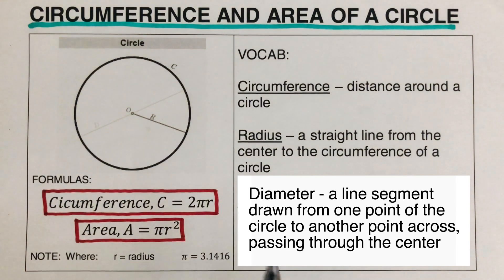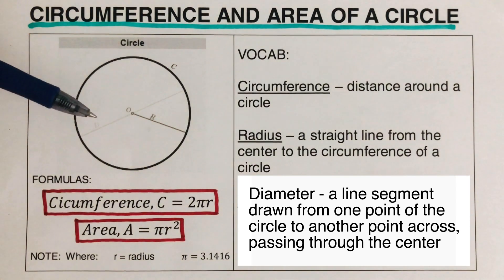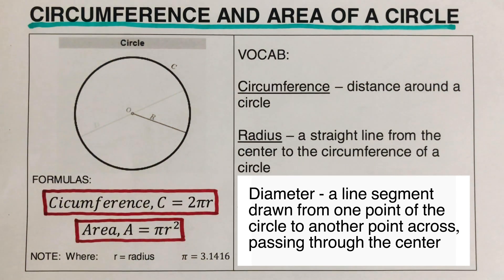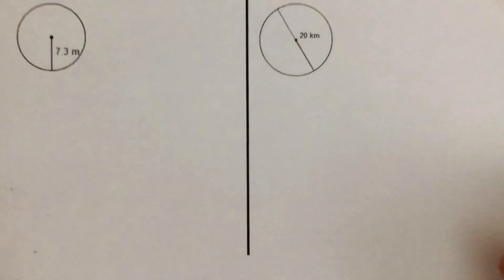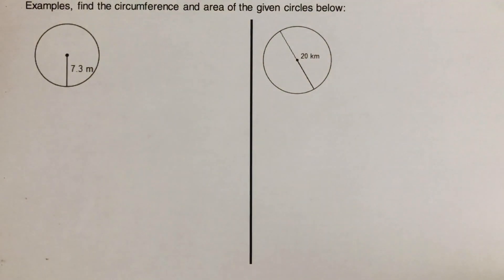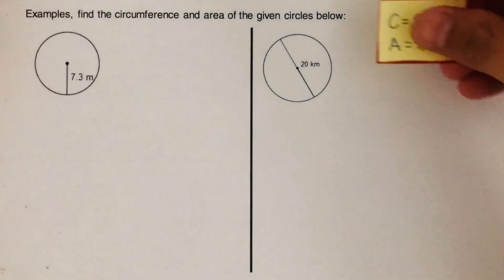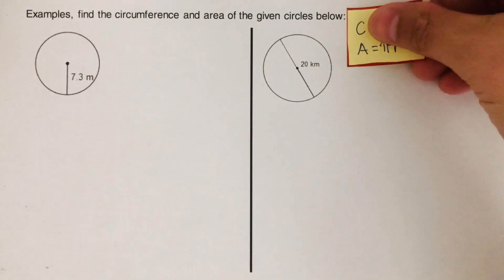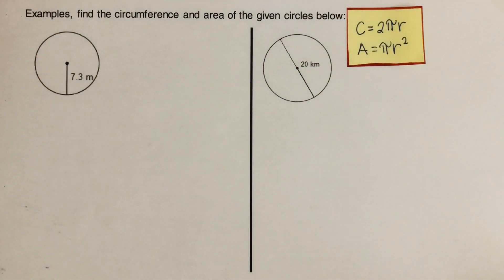Just a reminder that the diameter is twice the radius — there are two radii in one diameter. Now let's use these formulas on some problems. I'll put the formulas up here so we can use them to solve for whatever is missing.